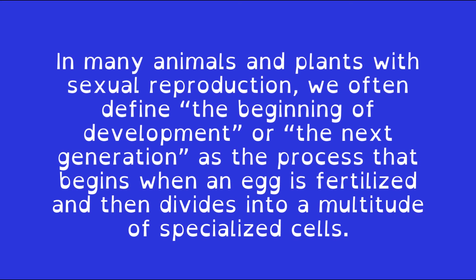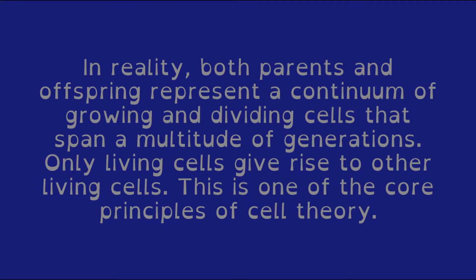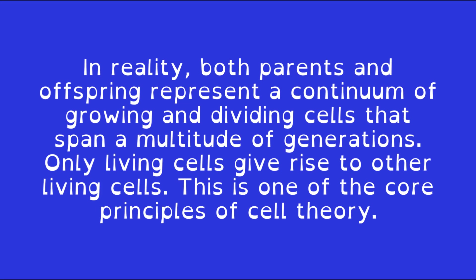In many animals and plants with sexual reproduction, we often define the beginning of development, or the next generation, as the process that begins when an egg is fertilized and then divides into a multitude of specialized cells. In reality, both parents and offspring represent a continuum of growing and dividing cells that span a multitude of generations. Only living cells give rise to other living cells — this is one of the core principles of cell theory.